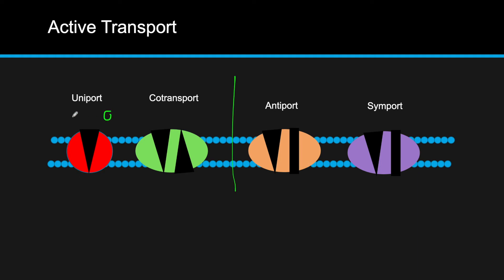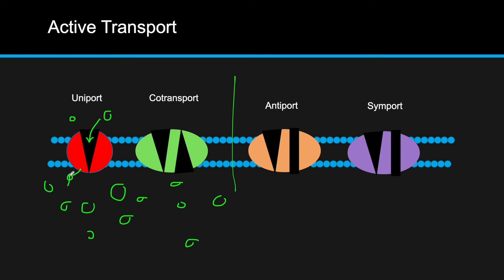Say you have molecules in a very low concentration inside the cell and a high concentration outside. To move these molecules into the cell — which won't happen naturally — a carrier protein utilizes ATP to change shape and bring the molecule all the way through, moving it from low to high concentration against the concentration gradient. When ATP is used, it turns into ADP, releasing a free phosphate, and the breaking of that bond provides the energy.